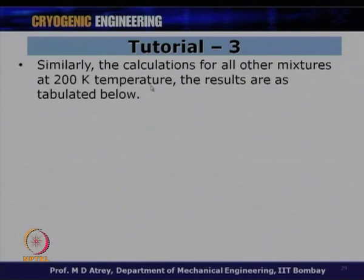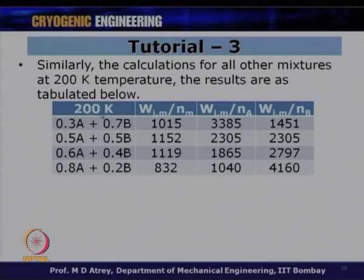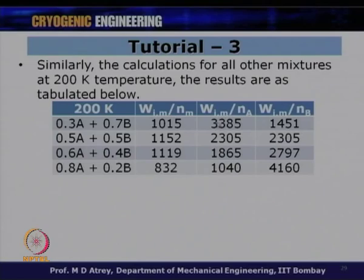The calculations for all mixtures at 200 K follow the same pattern. The table at 200 K shows similar trends: WIM/NM first increases then decreases with increasing A composition; WIM/NA decreases as A's molar composition increases; WIM/NB increases as B's molar composition decreases. Both 300 K and 200 K tables confirm consistent behavior.